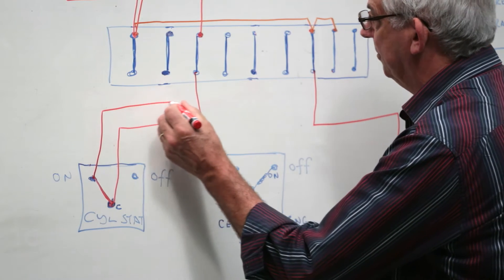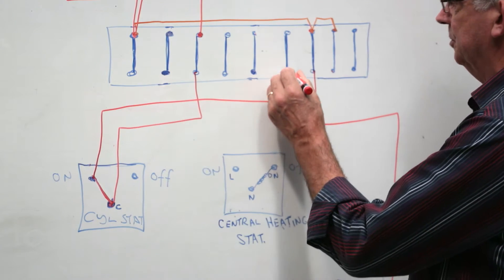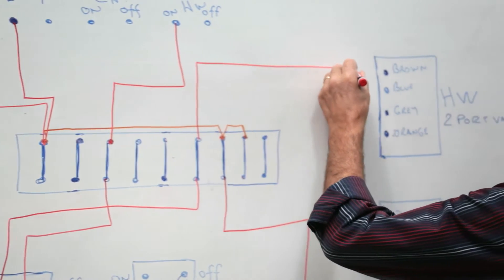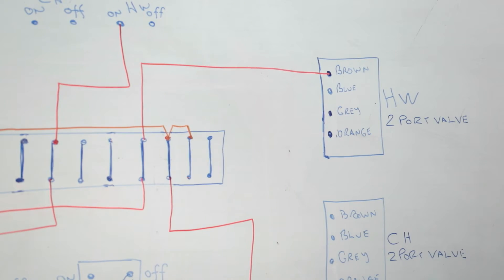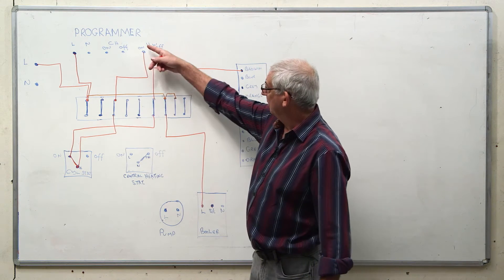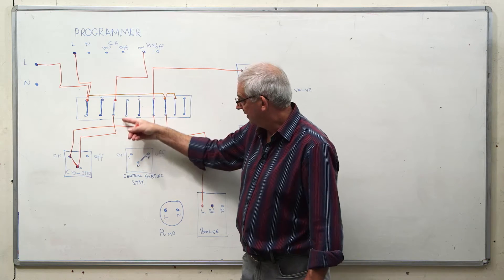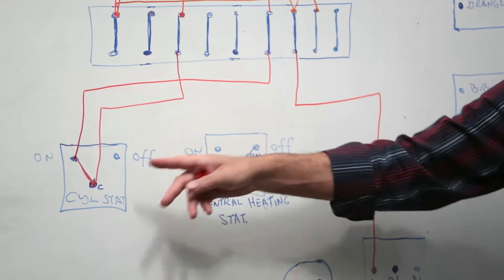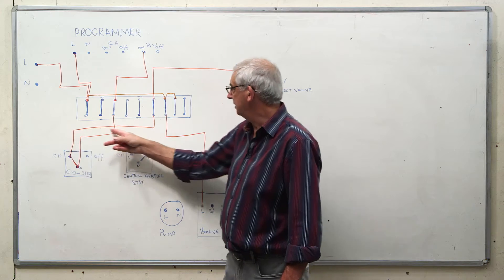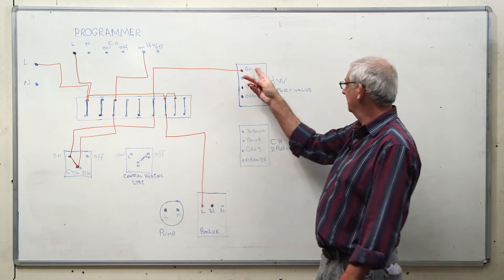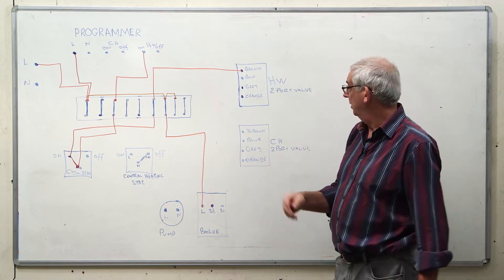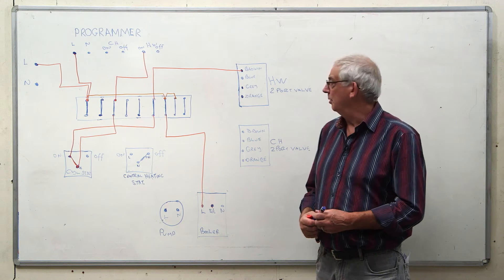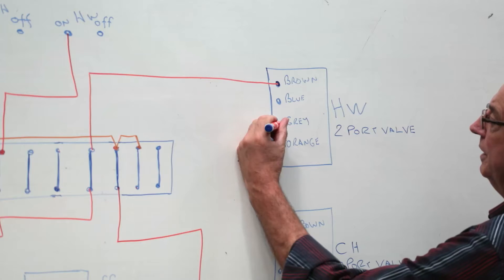When the on terminal's live we need to send the signal to the hot water valve, connect it to the brown. So now we can see programmer's calling for heat. The current flows through to the cylinder stat. The cylinder stat is in the on position. These two are closed. It sends a signal back up through to the hot water two port valve. The two port valve now opens and it makes the micro switch within the valve.